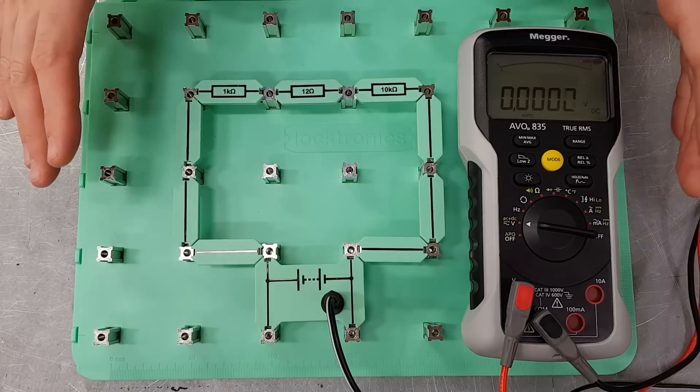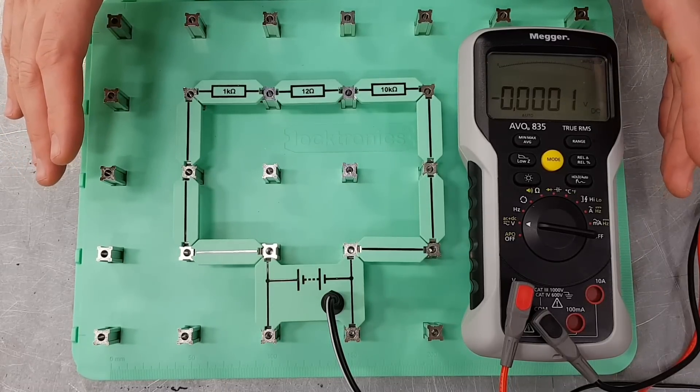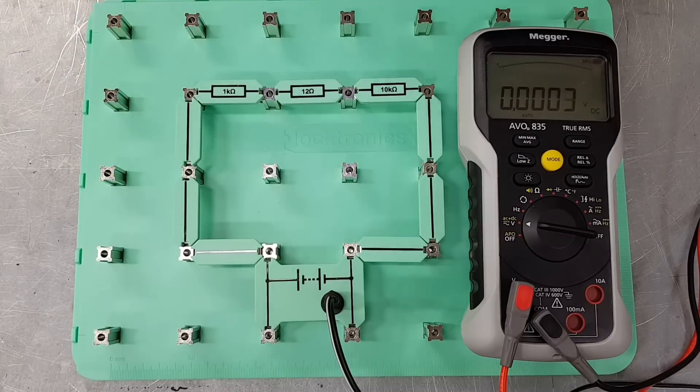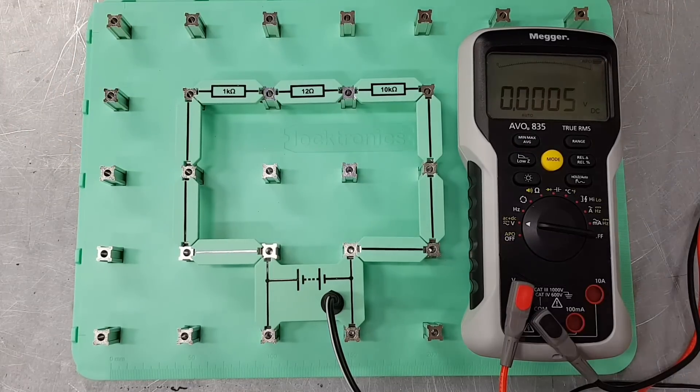So now that we've measured our DC voltage in this circuit what we'll do is we'll plug in an AC supply and then we'll show you how to set the meter up to measure AC voltage.